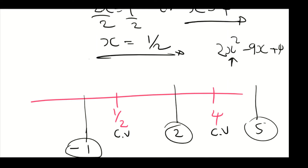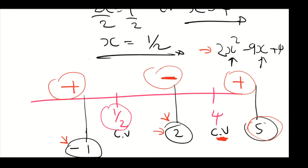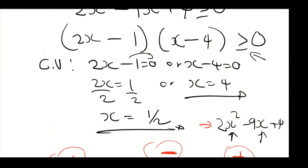We substitute these values where there's x. We're interested in the signs, not the actual solutions. The sign before the critical value of one half — substituting minus 1 — gives a positive. Substituting 2 gives a negative. Substituting 5, just after the critical value of 4, gives a positive. So the solution is positive when x equals minus 1, negative when x equals 2, and positive when x equals 5.